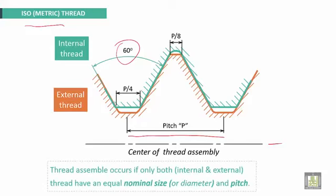Thread assembly occurs only if both internal and external threads have an equal nominal size or diameter and pitch. Otherwise, assembly will not occur.